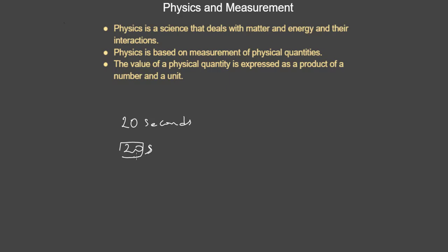Every physical quantity in physics can be either a base quantity or a derived quantity. Let's talk about base or fundamental physical quantities.